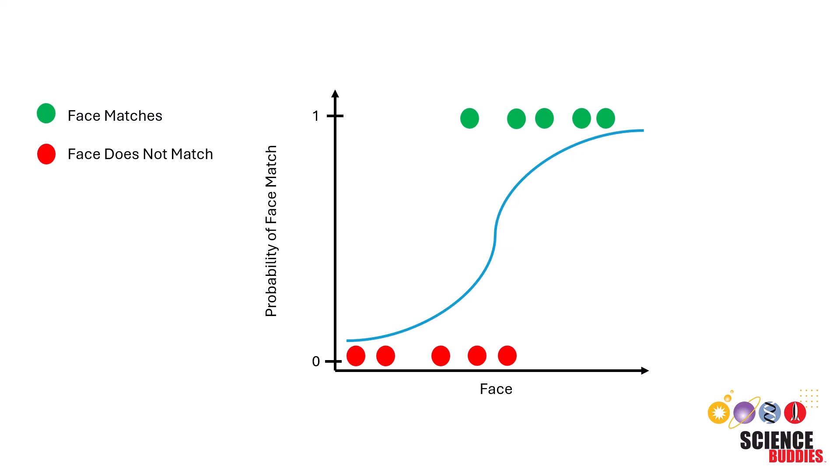However, we want the model to output its actual predictions, not probabilities, and this is where the threshold comes in. We can set the threshold to anything we want between 0 and 1, but let's start with 0.5. To use the threshold, we will classify anything above the threshold as a match and anything below the threshold as not a match.